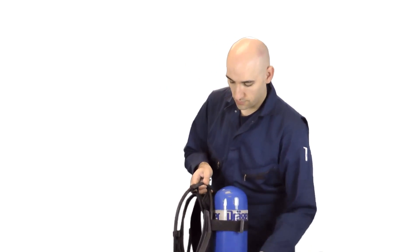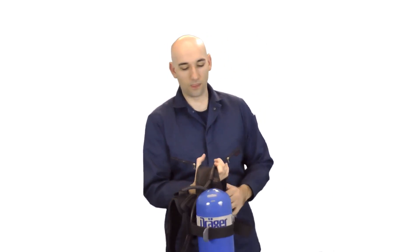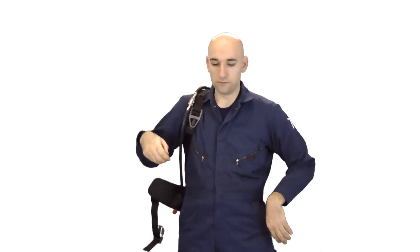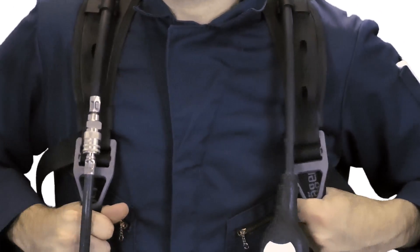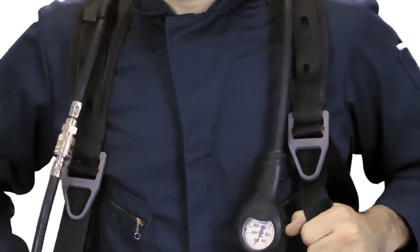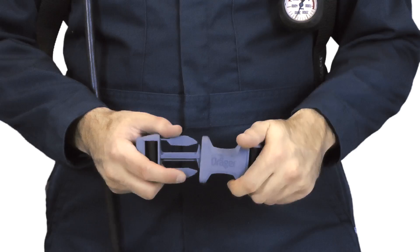Begin by placing one of your arms through the shoulder strap. Reach behind with your other hand and pull the harness over your shoulder. Pull down on the shoulder straps to raise the SCBA into position and then buckle the waist belt.